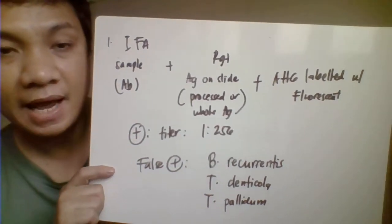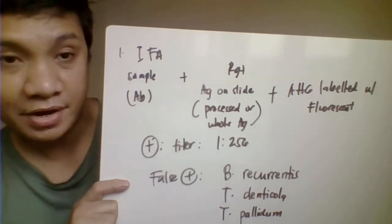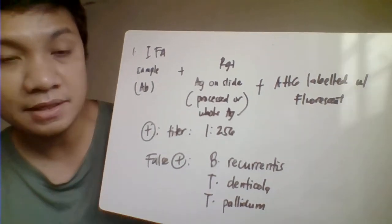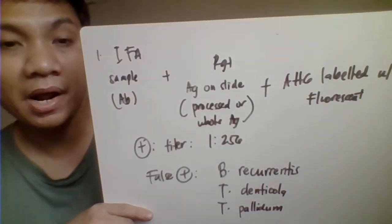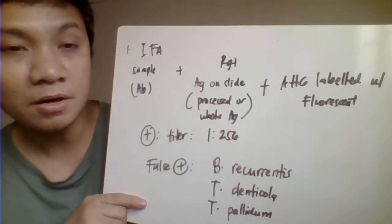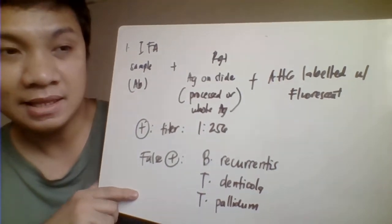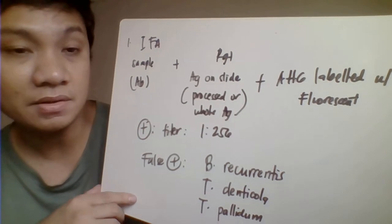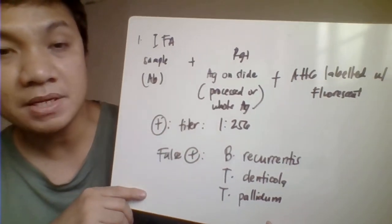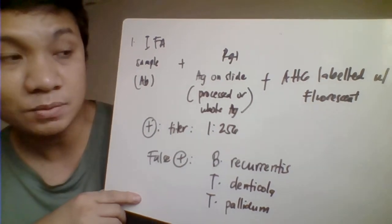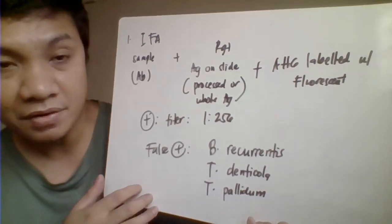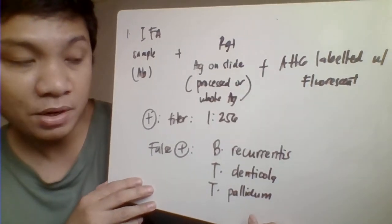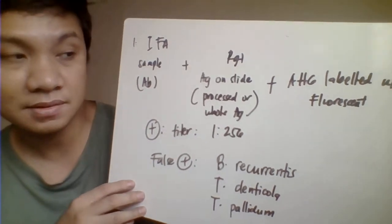In the immunofluorescent assay, you detect the antibody in the patient's system. The antigen — which can be in the form of processed or whole antigen — is placed on a slide. Anti-human globulin labeled with fluorescence is added, and the fluorescence activity is directly proportional to the result. A titer of 1:256 is considered positive for Lyme disease. However, infections caused by Borrelia recurrentis, Treponema denticola, or others may give a false positive result.